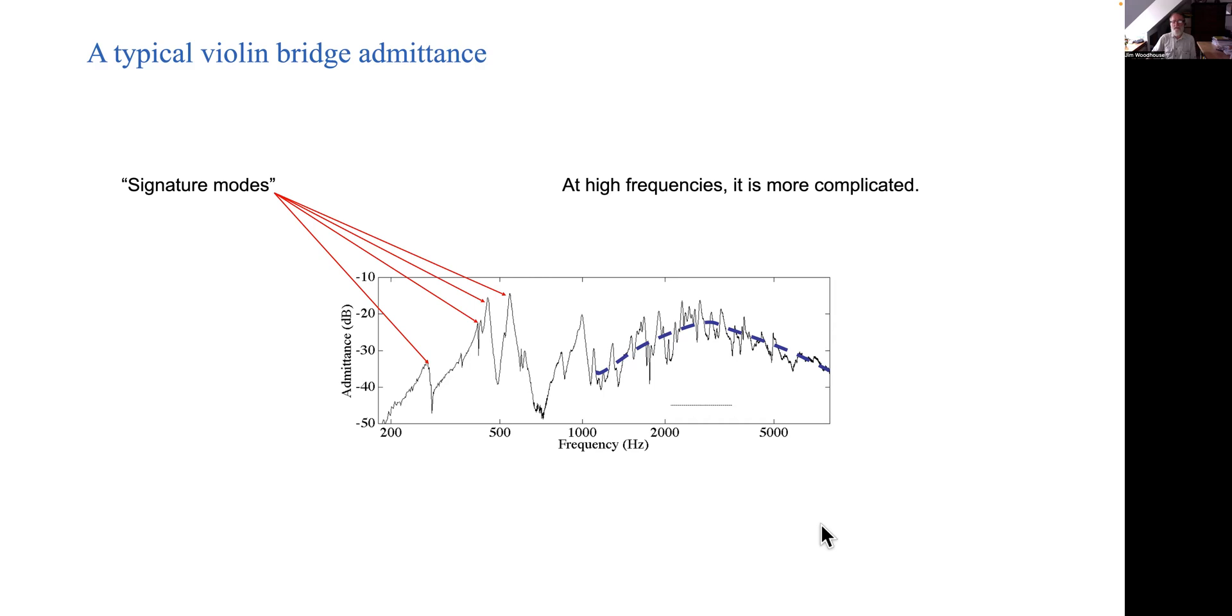As our first guess the bandwidth due to damping goes up in proportion to the center frequency of the mode. So what that means is that when you get to high frequencies the mode spacing stays roughly the same but the bandwidth gets bigger. Or if we plot it on this logarithmic frequency scale the peaks get closer together but the apparent bandwidth stays the same.